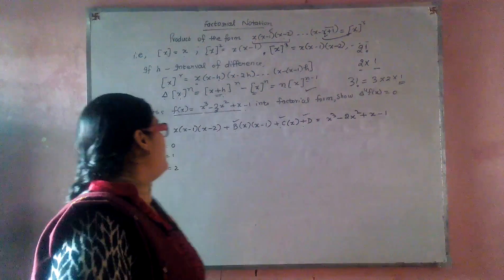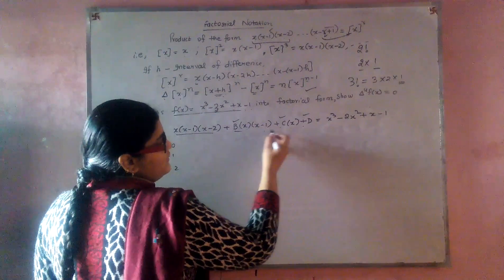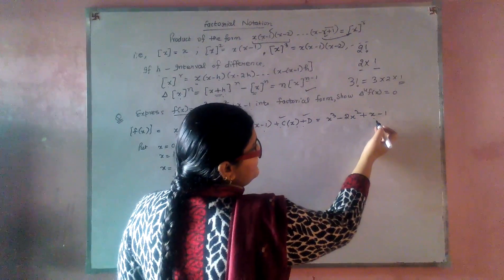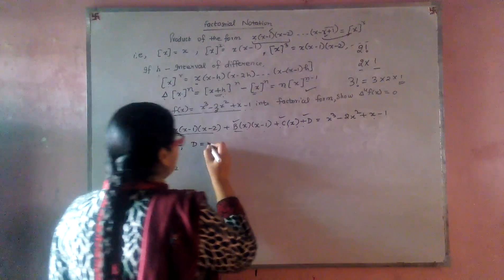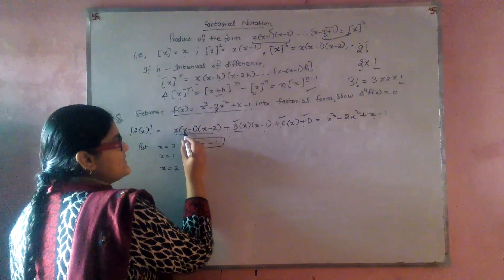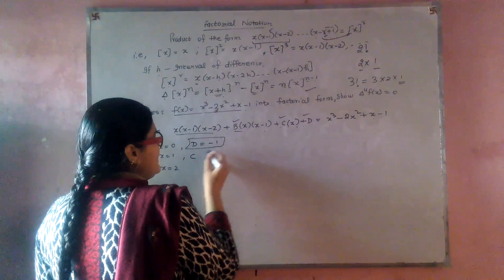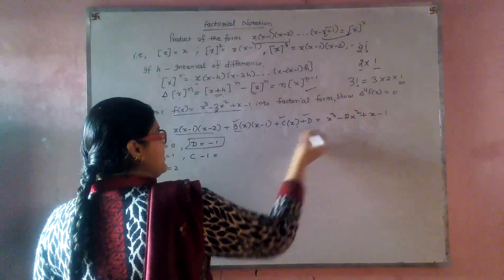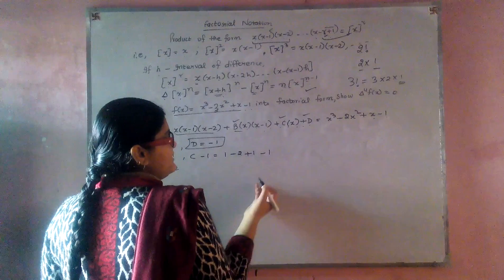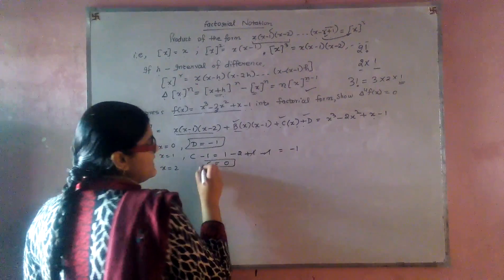Substituting x = 0: the factorial terms lead to 0 and we get d only. On the right side substituting 0 gives minus 1, so d = minus 1. Substituting x = 1: this gives c only. 1 cubed minus 2(1 squared) plus 1 minus 1 leads to minus 1, which becomes minus 1 plus 1, so c = 0.